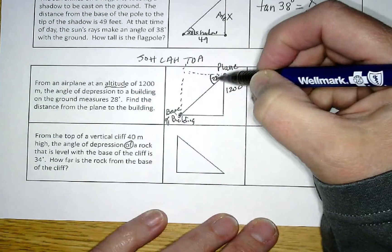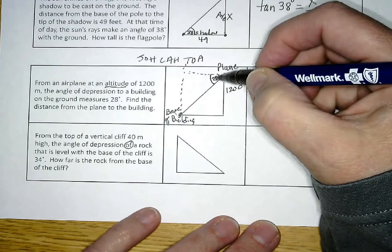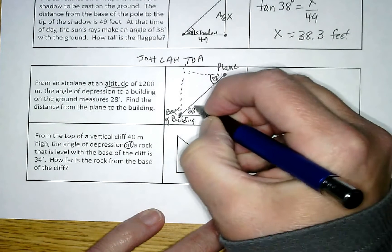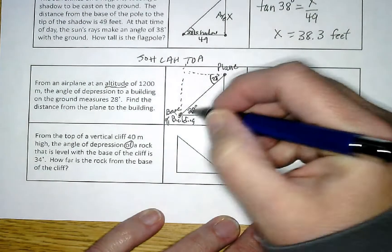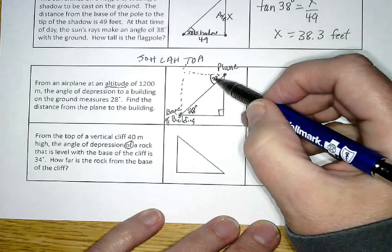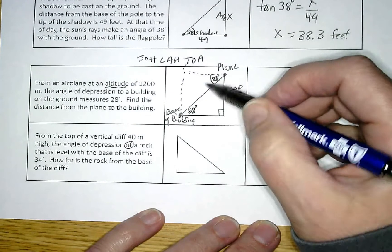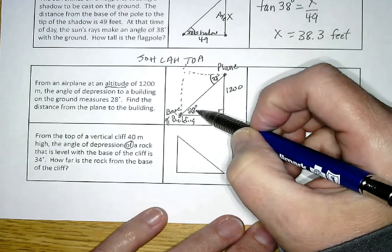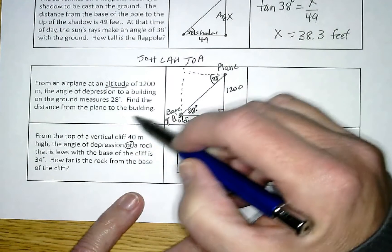But as we've set up above, the angle of depression and the angle of elevation are equal to each other. Now that's inside the triangle, I can use that. If it's out here I can't use that one, but if I convert it down here, the angle of elevation is also 28. Find the distance from the plane to the building.